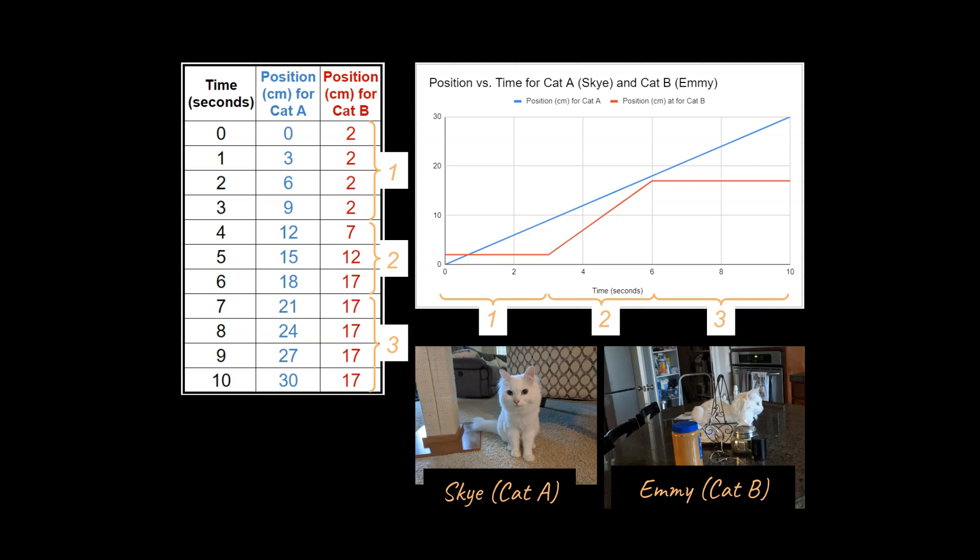Why is that? Well, her position has a greater change per second than his does during the same time. Her data looks different as well, because for the first few seconds her position is not changing, and for the last few seconds her position is not changing as well, whereas Sky has a constant position change throughout the 10 seconds.